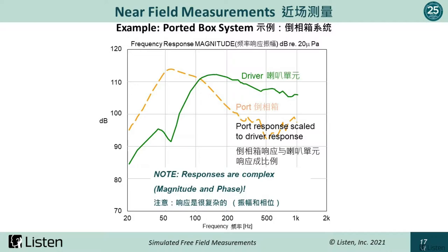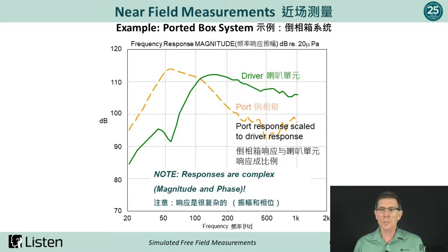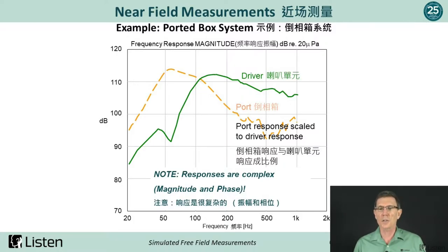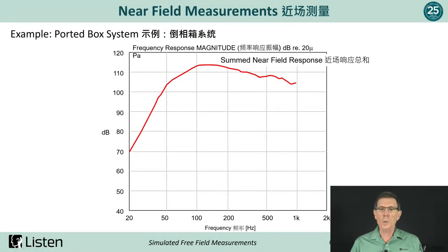Here is an example of an individual near-field response for a ported loudspeaker, both at the driver and the near field of the port. Responses are complex, both in magnitude and phase, although only the magnitude is shown here. The port response is scaled to the driver response based on the ratio of their effective radii prior to complex summation. Consequently, we get the complex summed overall near-field response for the ported system scaled to the far-field response at one meter.